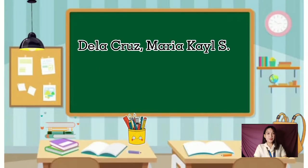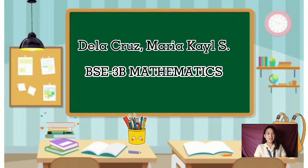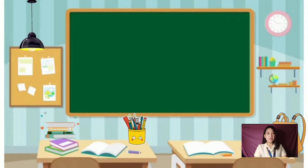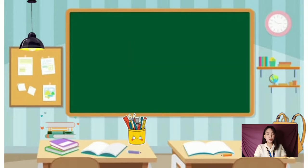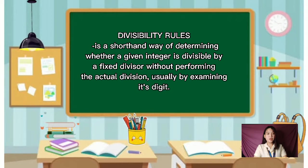Good day everyone, and welcome to Marihal from BSE TV Mathematics. For this video, I will discuss the divisibility rules for the number 2 to 13. Divisibility rules is a shorthand way of determining whether a given integer is divisible by a fixed divisor without performing the actual division.